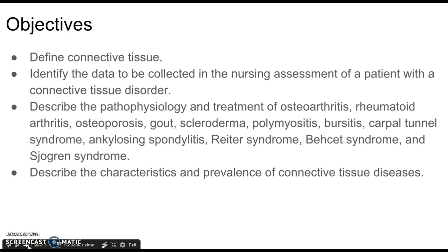If you go back a page to page 939, it talks about all other kinds of connective tissues and different types — blood vessels, the GI tract, all of that — and not that those aren't important, but for this lesson we're talking about bones, cartilage, ligaments, and tendons. We're going to identify data to be collected in the nursing assessment of a patient with a connective tissue disorder.